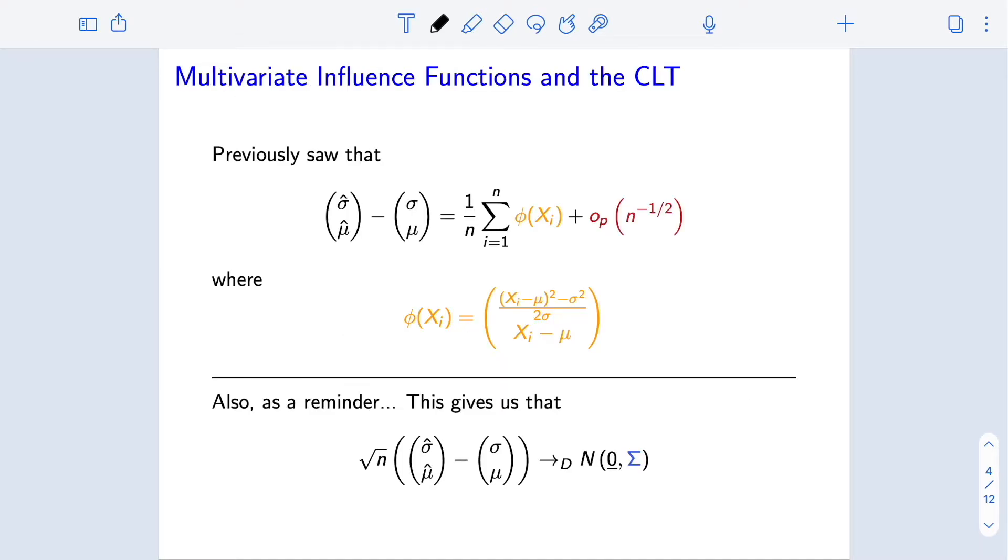As a reminder, we previously saw that this vector sigma hat mu hat as an estimator of sigma mu was asymptotically linear with influence function, in this case a two vector, where we have the component corresponding to sigma hat and the component corresponding to mu hat. This is going to be very important moving forward.